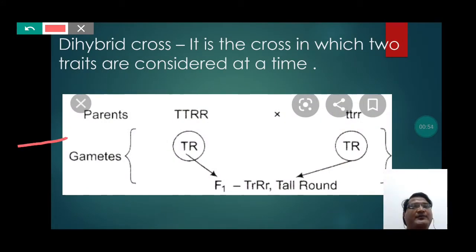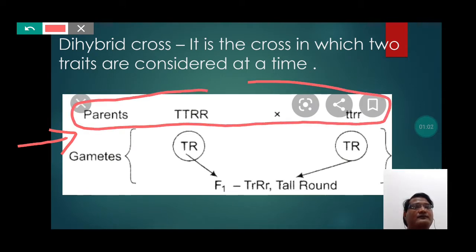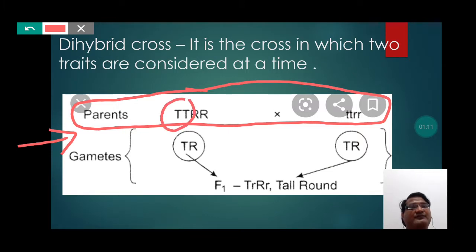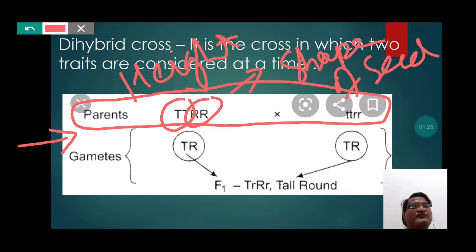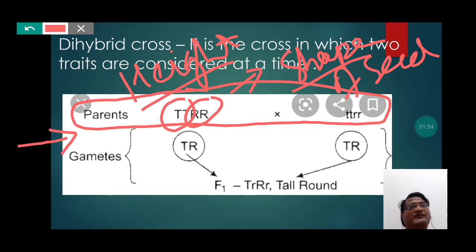Let us understand the concept of Di-Hybrid Cross from this picture. Here you can notice that the parents are having genes of two different traits. The first trait is of height and the second trait is of shape of seed. So here two traits are being considered: height of the plant and shape of the seed which it bears.